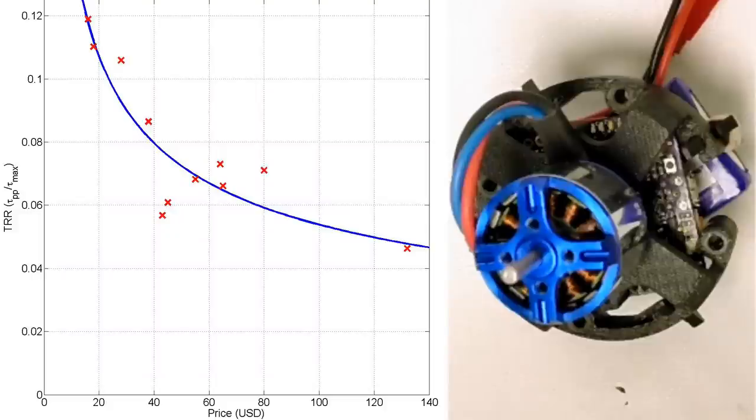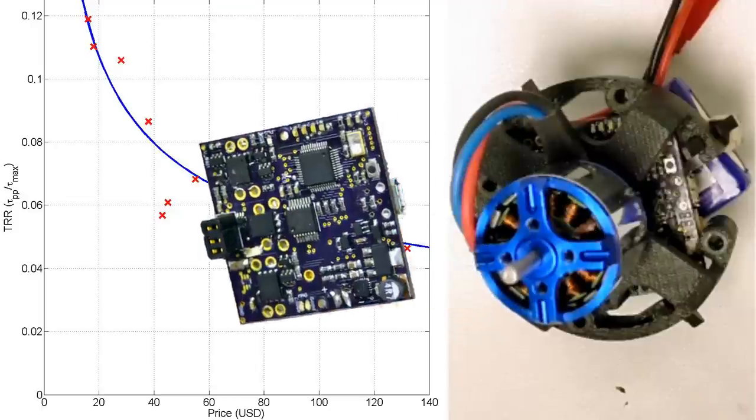Across a wide range of motors, torque ripple and cost are inversely related. Here, on the x-axis, we have cost. On the y-axis is the torque ripple ratio, which is a measure of torque ripple. And you can see cheaper motors have more torque ripple.